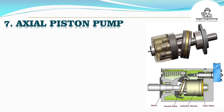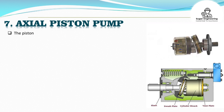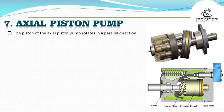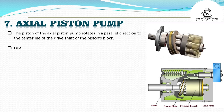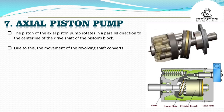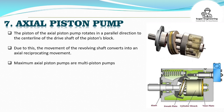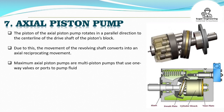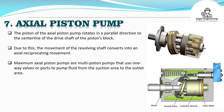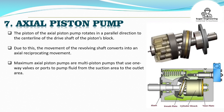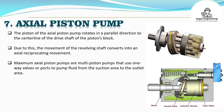The piston of the axial piston pump rotates in a parallel direction to the center line of the drive shaft of the piston block. Due to this, the movement of the revolving shaft converts into an axial reciprocating movement. Maximum axial piston pumps are multi-piston pumps that use one-way valves or ports to pump fluid from the suction area to the outlet area.